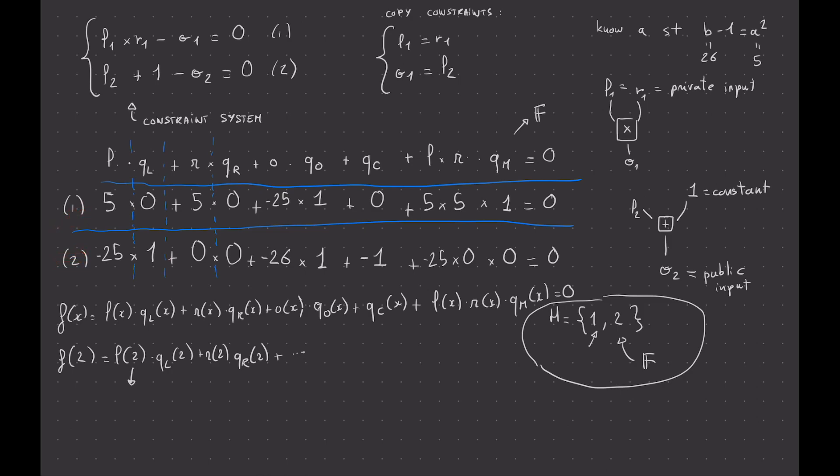So this polynomial is kind of specific because there are some parts of the polynomials that are fixed by the circuit. Some others are filled in by the prover. So anyway, now we have a polynomial, and I want to talk more about the protocol.